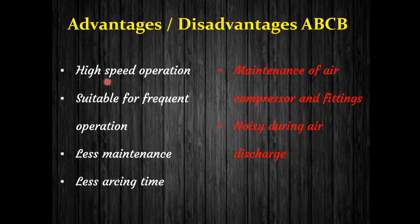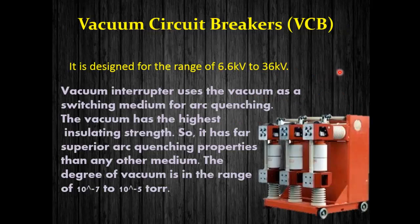The advantages of the ABCB include high speed operation, suitability for frequent operation, less maintenance, and very short arc extinction time. The disadvantages are that since it requires very high pressurized air, it also requires compressors and fittings which need extra maintenance, and the operation is comparatively noisy during air discharge.